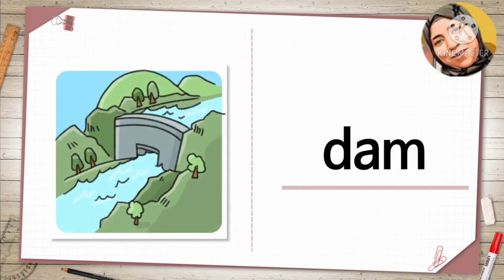Dam. This is a dam. It is built across the river. A dam stops the water from flowing and lets a little water out at a time. By doing this, the water makes power, and we use the power to make electricity.